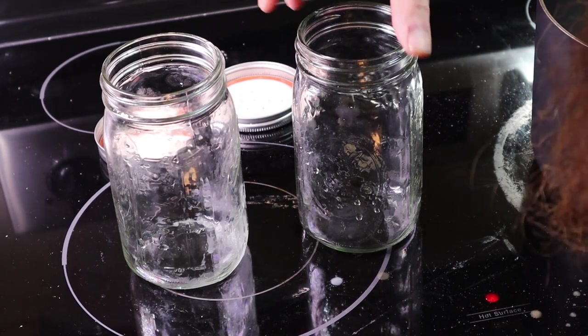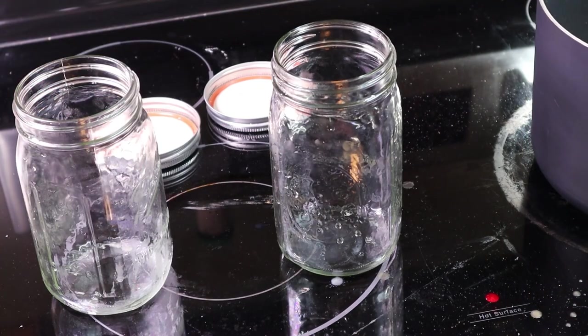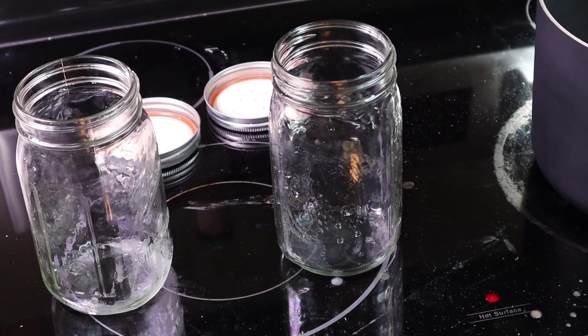So these are my two quart canning jars. I basically have two that are on the hive now and then I've got two extra ones and I just rotate them out.